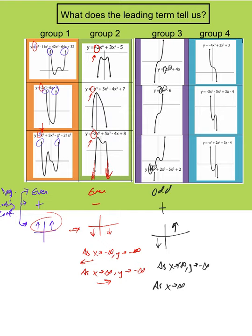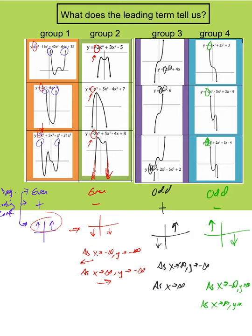The last group: we have odd degree but a negative leading coefficient. If we put in a big negative number for x and raise it to the seventh, that stays negative. But then multiplying that by a negative leading coefficient — a negative times a negative means this is going to go up on the left end. Put in a big positive number: 5 raised to anything is still positive, but multiplied by that negative leading coefficient — a positive times a negative — so that will be going down. As x goes to negative infinity, y goes to infinity; and as x goes to infinity, y goes to negative infinity. So what you're really thinking about is: is this a positive times a positive, a negative times a positive, a positive times a negative, or a negative times a negative? That's what we're looking for.